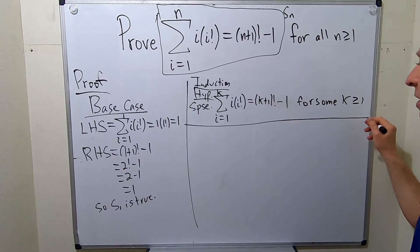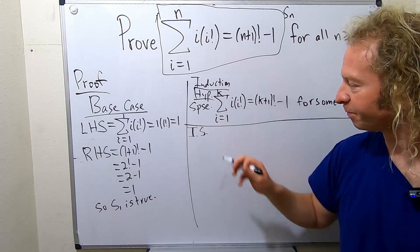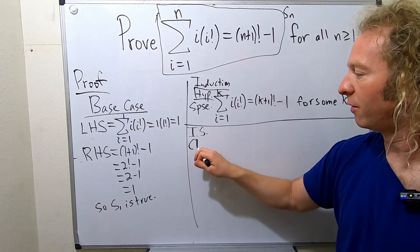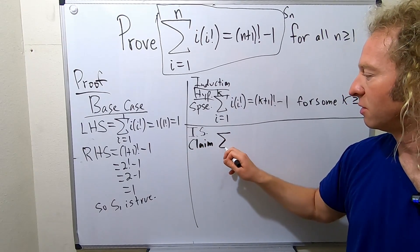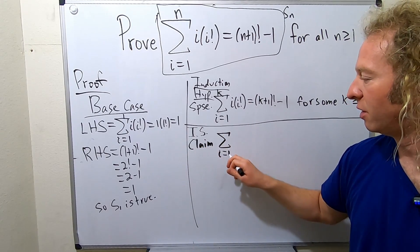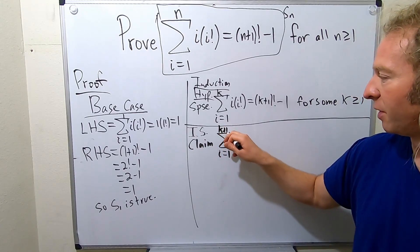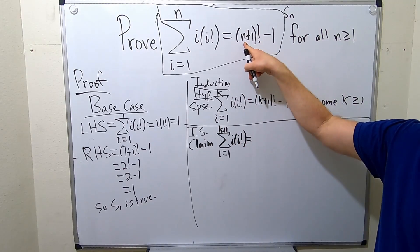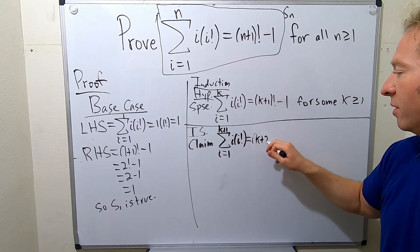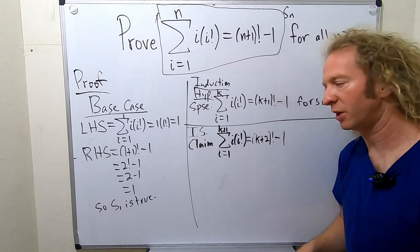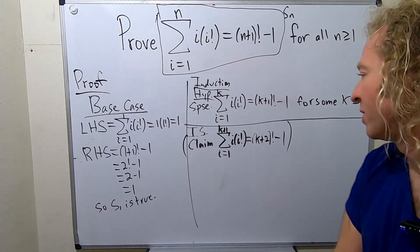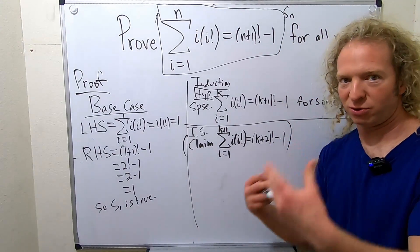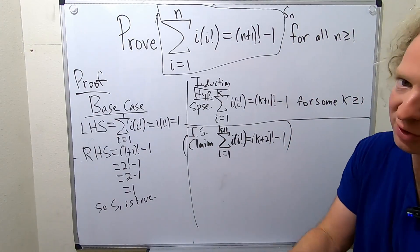Now let's do our induction step. This is to show that the statement is true when n is equal to k plus 1. So the claim is that the sum from i equals 1 to k plus 1 of i times i factorial equals k plus 2 factorial minus 1. We have to show this is true. It's really a good idea to write down what you're trying to show because you can't do the problem unless you know what you're trying to do.